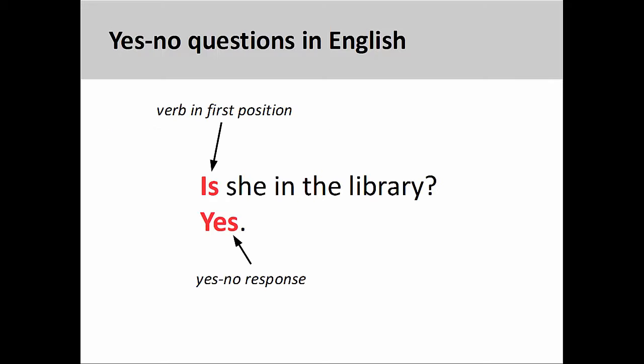As you see here, English yes-no questions are characterized by the conjugated verb being placed in the first position, or at the very beginning of a sentence. Yes-no questions are so called because they do not demand a detailed response in the manner that interrogative words do. The simple yes or no suffices.